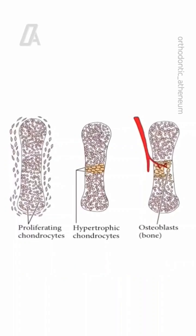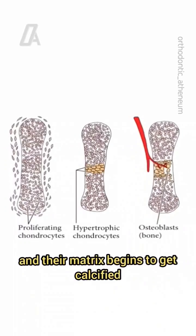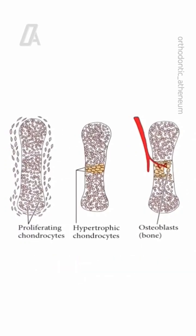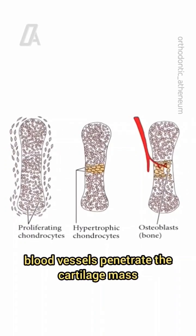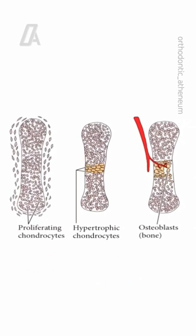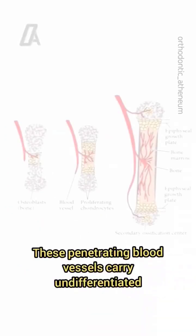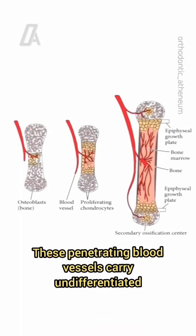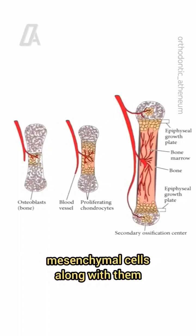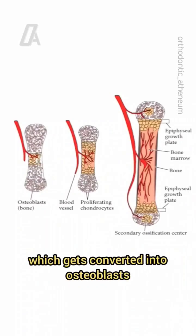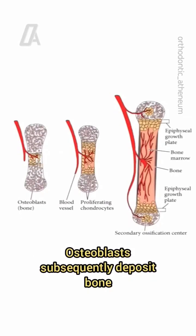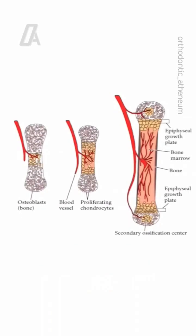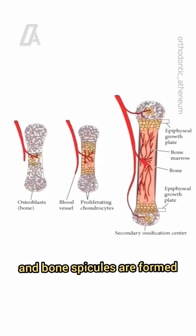Cartilage cells hypertrophy and their matrix begins to get calcified. During this time, blood vessels penetrate the cartilage mass from the perichondrium. These penetrating blood vessels carry undifferentiated mesenchymal cells along with them, which get converted into osteoblasts. Osteoblasts subsequently deposit bone and bone spicules are formed.